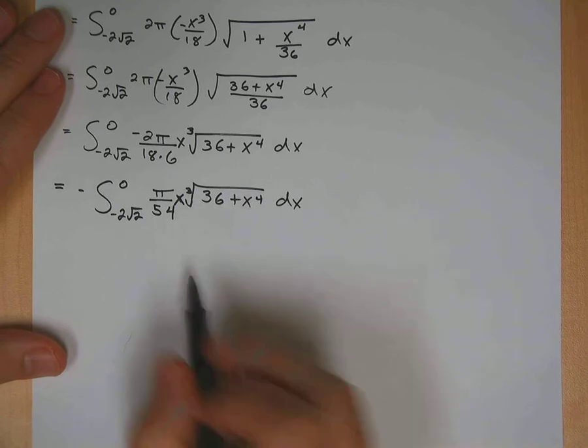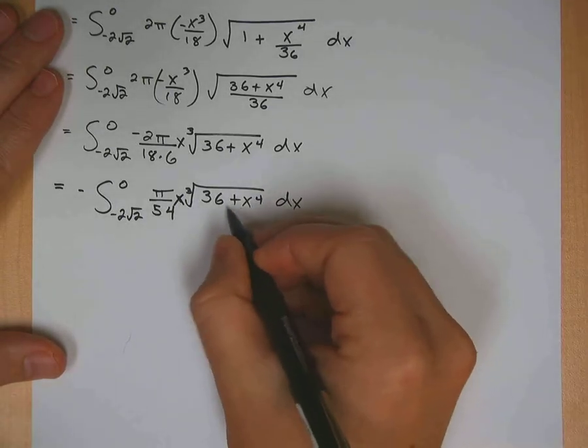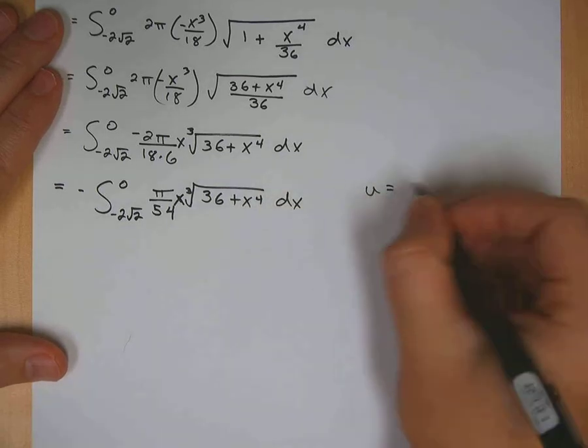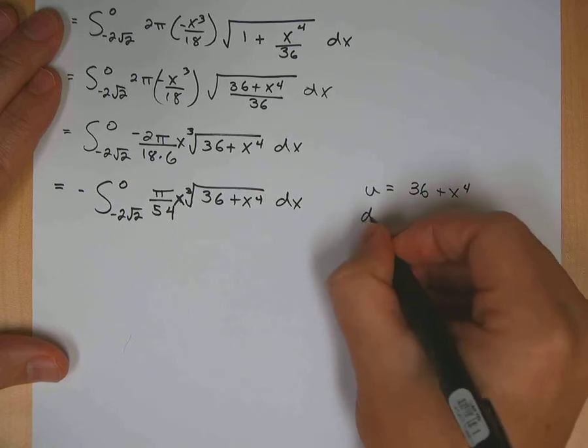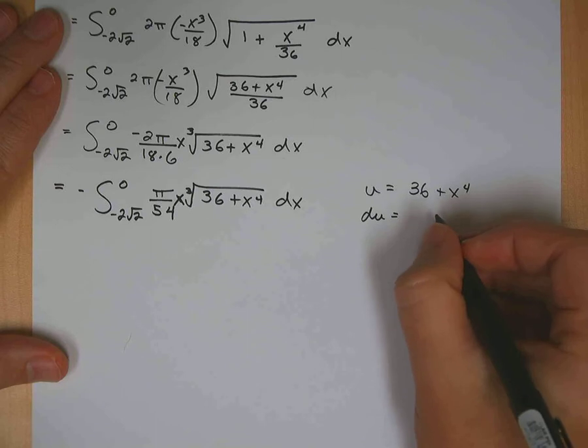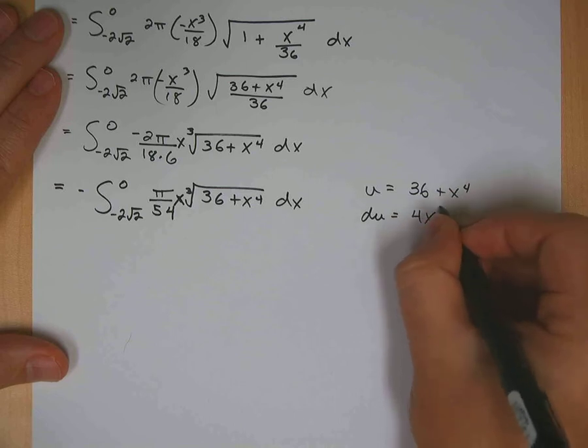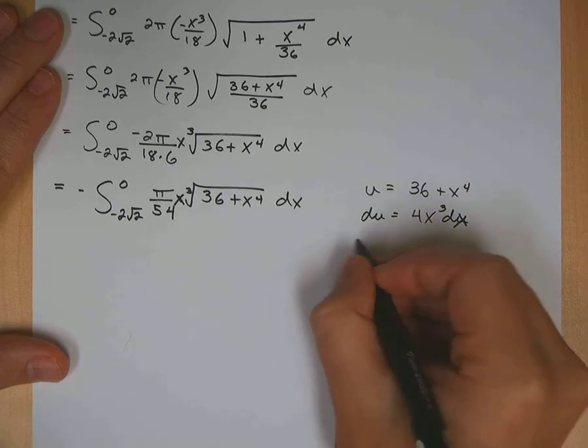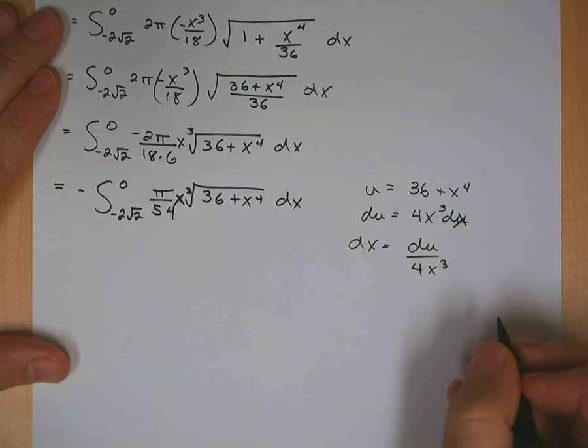Now we're going to have to do a u substitution to solve this problem. So I'm going to say my u is going to be this inside the radical here, the 36 plus x to the 4th. So I'll say that is my u. Should work out nicely because of the x cubed that's out there. Canceling with my dx. Now, let's see. That would be 4x cubed du. Or dx, sorry. So dx would be equal to du over 4x cubed.